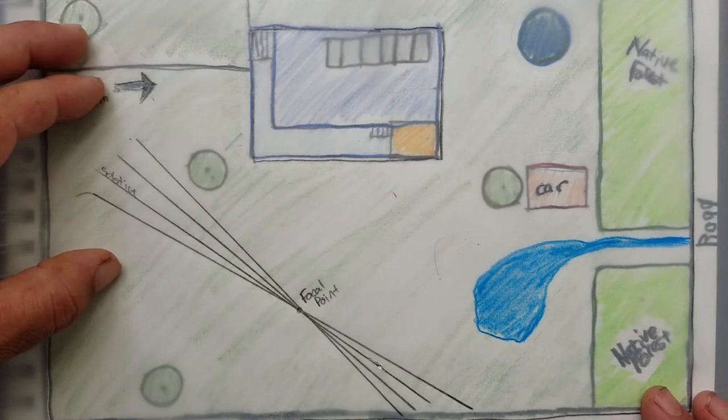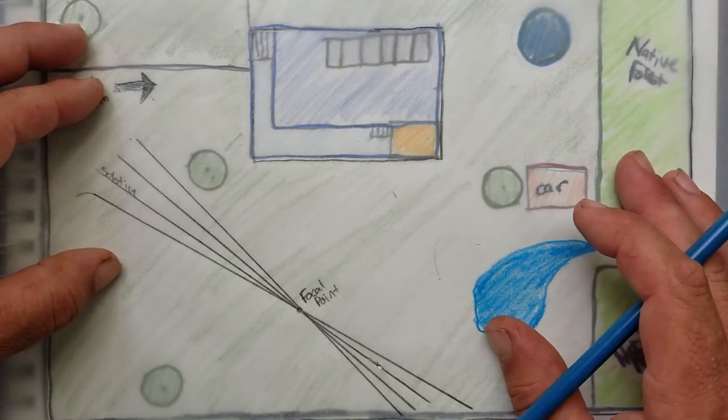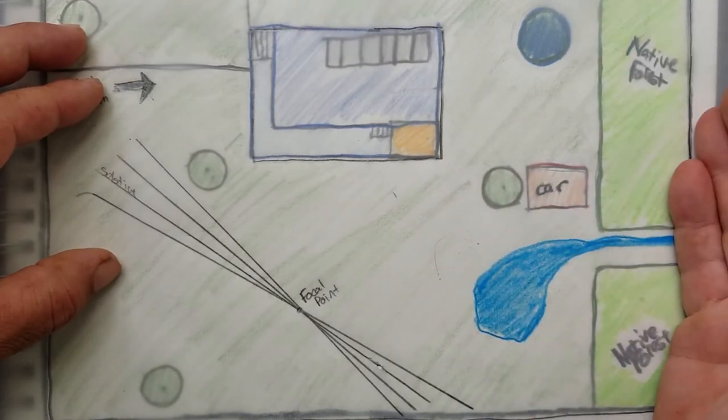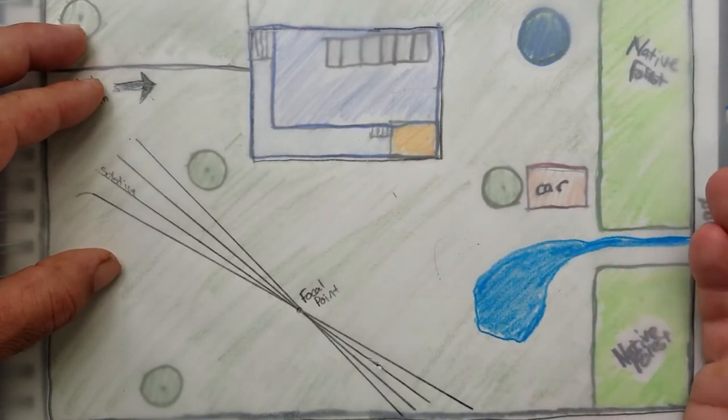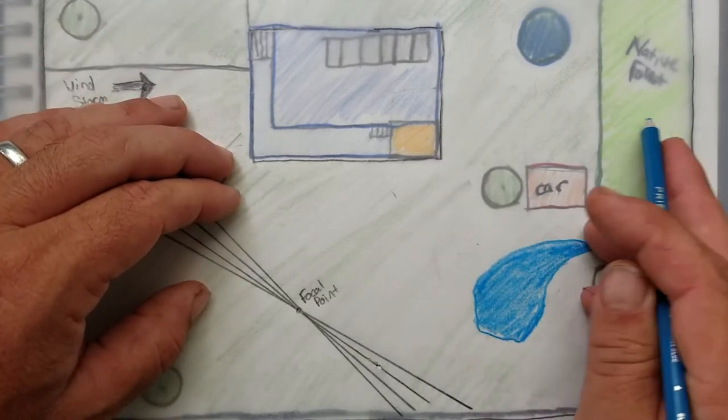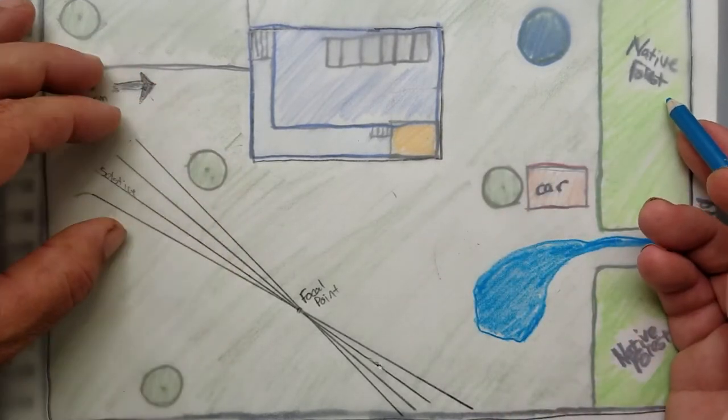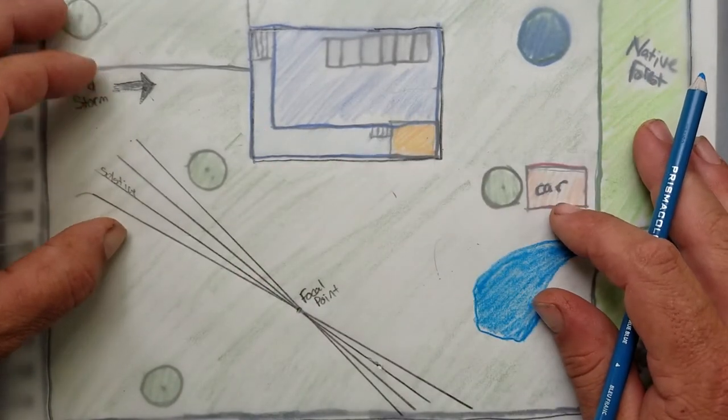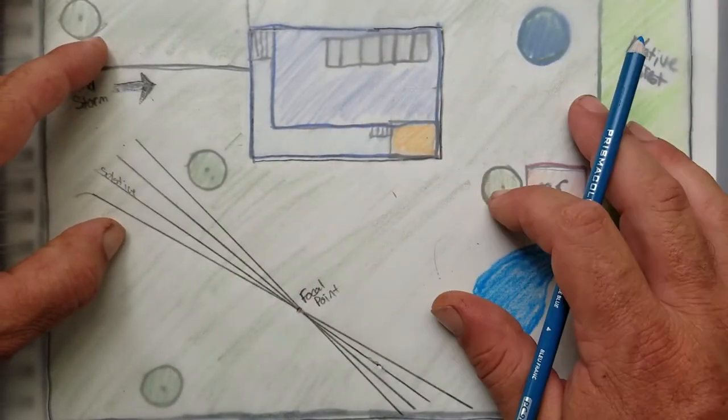What else do we have? If you have utilities, if you're not totally off the grid like we are here, you could identify where those are coming in. Perhaps you have power lines that are going underground, phone lines, water lines that may be underground and hidden. This would be the time for you to include that into the zone and sector map.